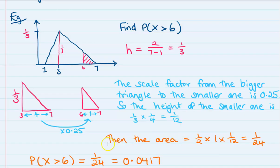The height of the smaller triangle is one-twelfth, so the area of that triangle is half times the base times the height, and that makes 1 over 24, which we would write as decimals for probabilities like this. So that probability that x is greater than or equal to 6 will be equal to 0.0417.